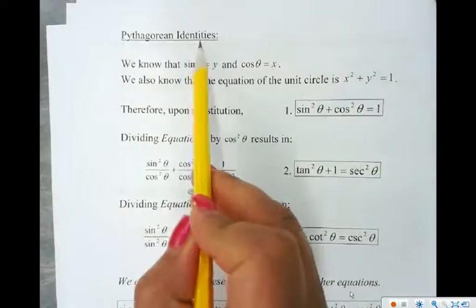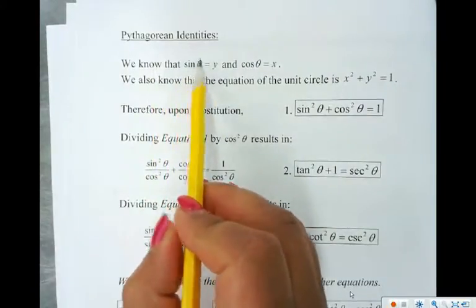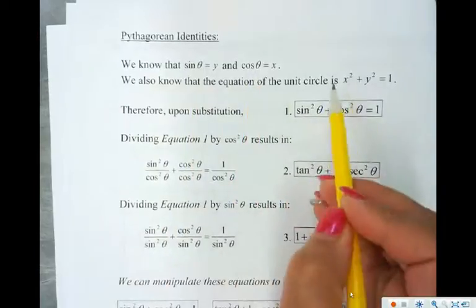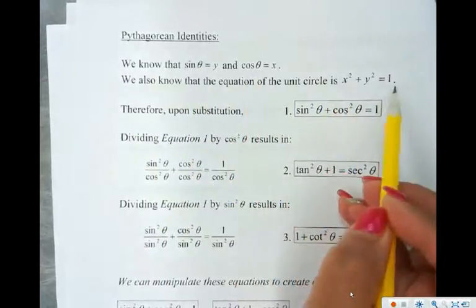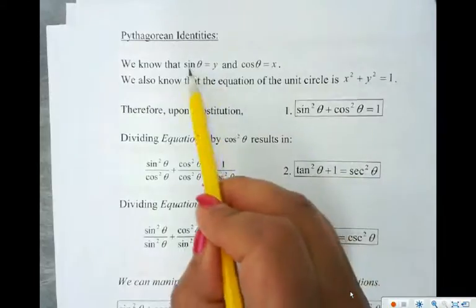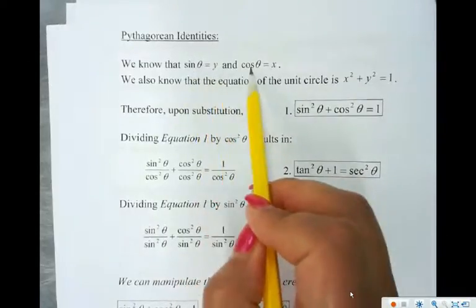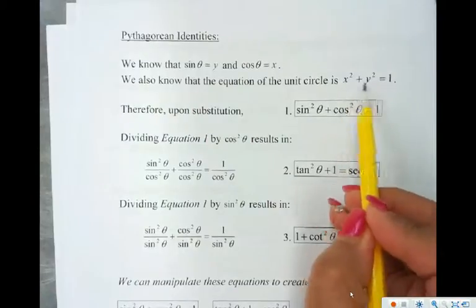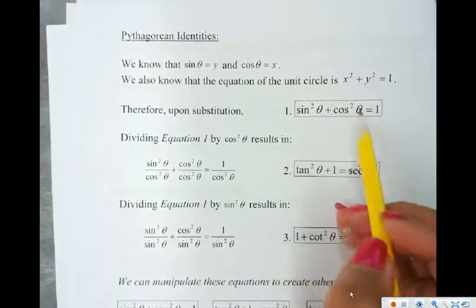All right, now there's a few here that you need to know. You need to be familiar with these - these are the Pythagorean identities. They basically come from x squared plus y squared equals r squared, or here if it's the unit circle then it's equal to 1. Remembering that sin θ is equal to y and cos θ is equal to x, when we substitute sine and cos in here we end up getting this.